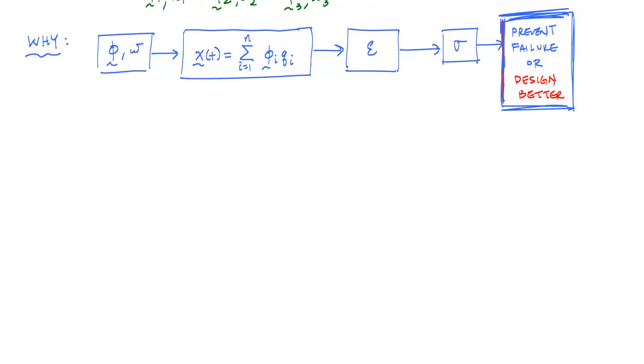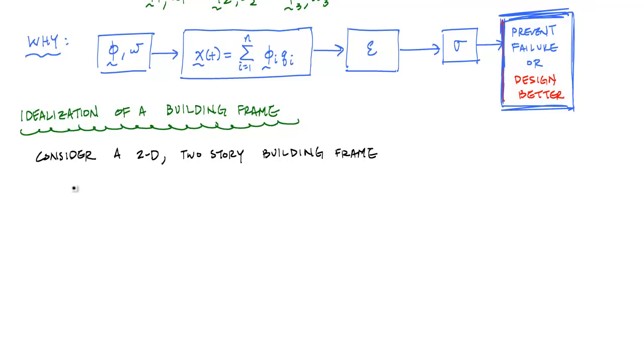The first thing we normally have to do is understand how to idealize a structural system. I'm going to look at a building frame. Here is the best I can draw a 2D building frame in all its glory. This building frame has distributed masses everywhere. Each joint of this frame, because everything is flexible, can move in three directions in 2D, six directions if it was 3D, but we're going to keep this a little bit simpler.